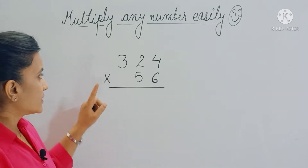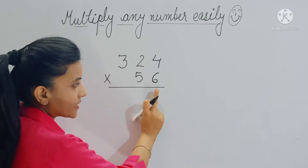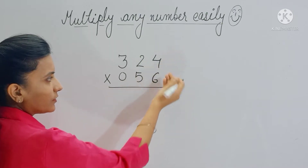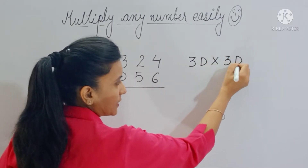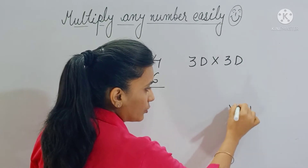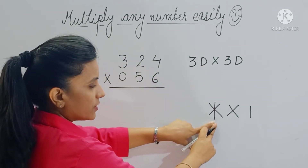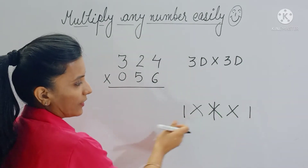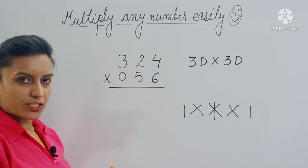Let's multiply 324 by 56. Now 324 is a three-digit number and 56 is a two-digit number, so let's place one zero here — now both become three-digit numbers and we can follow the 3D by 3D multiplication pattern. The pattern is i, cross, star — three designs for a three-digit number — and then we repeat: cross, i. So in total you have five steps.